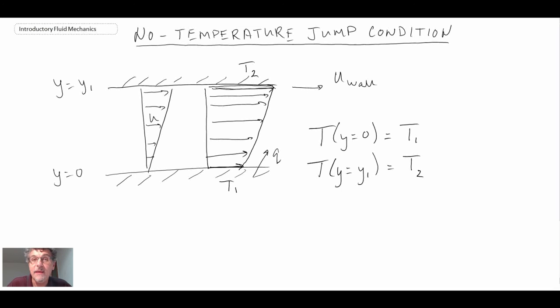That's the no-slip and the no-temperature jump condition. They are boundary conditions that we will apply when we're studying things. Quite often the no-slip is the one that we will use if we're trying to solve for a velocity profile. Two very important concepts within fluid mechanics: no-slip and no-temperature jump.